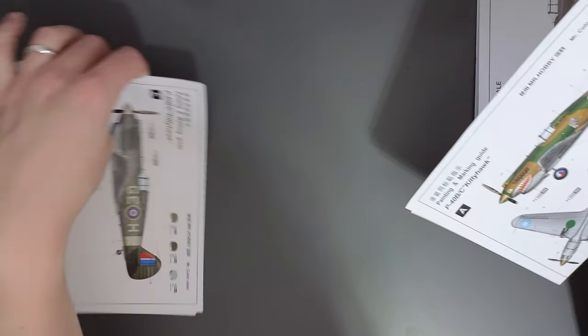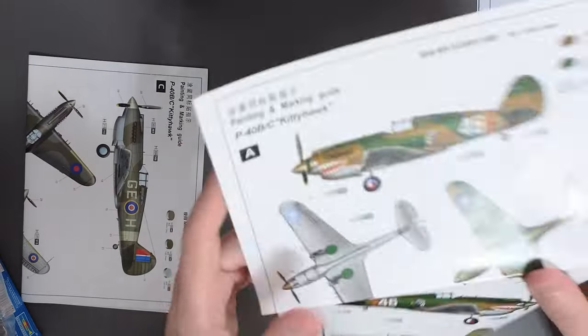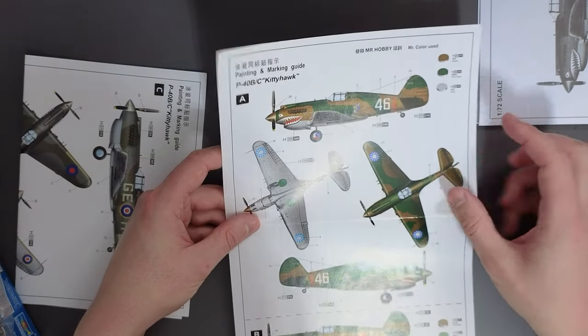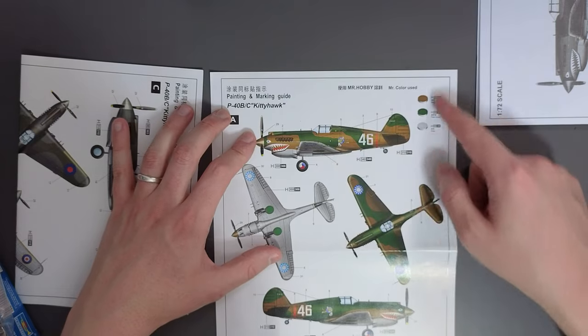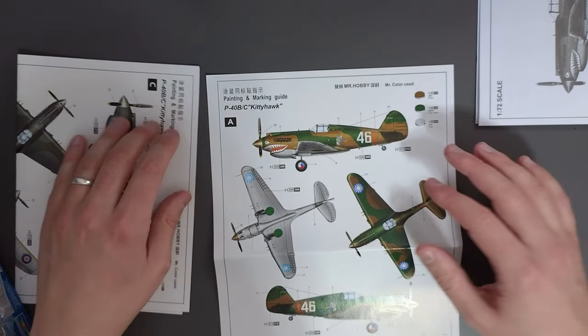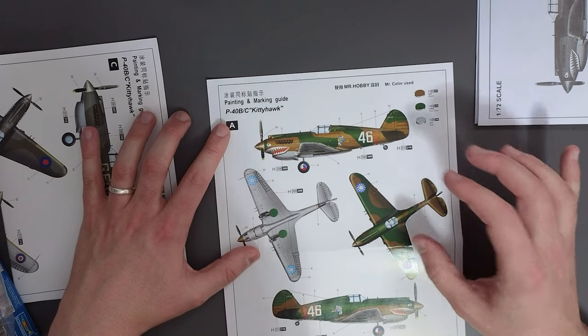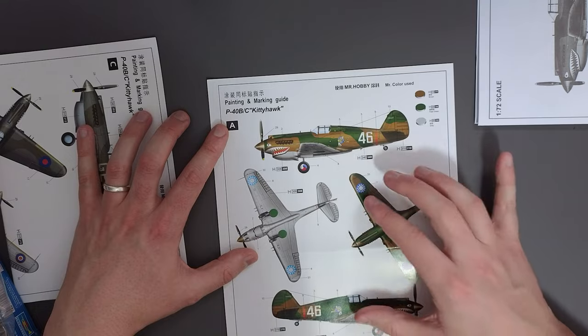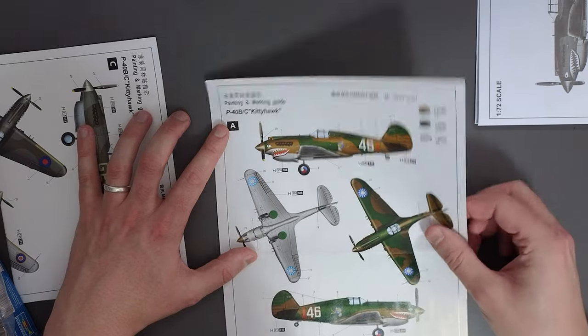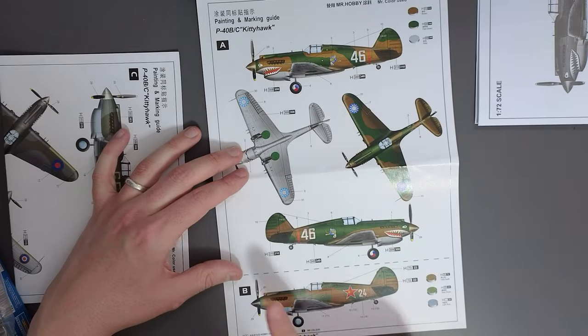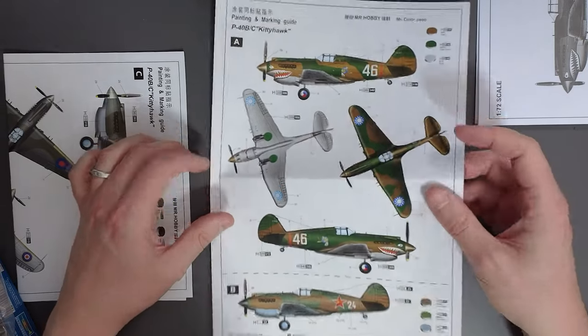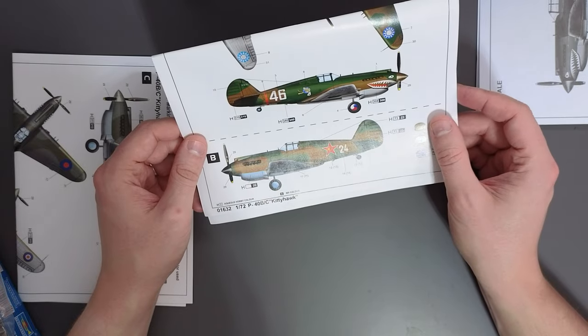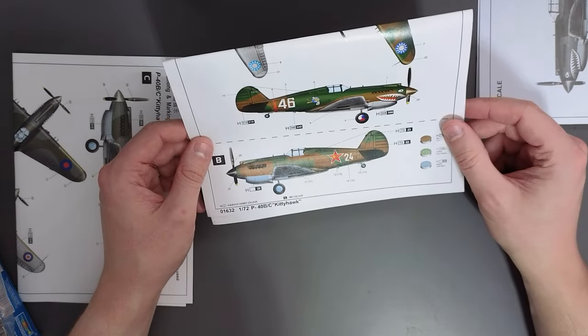So let's look at the painting instructions then. We have let's start with A. A is the first one and it is for a P-40B/C Kitty Hawk. So yes it's Mr Colour paints, Mr Hobby Mr Colour. But yeah you can pick whichever paints are suitable. I've already done a Flying Tigers version of the Airfix kit so I'll have these probably as spare transfers lying around.